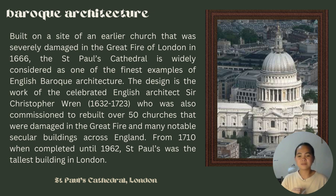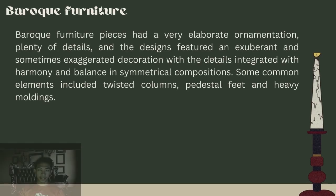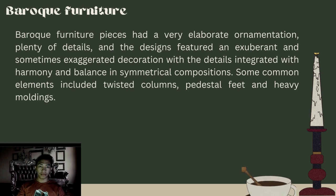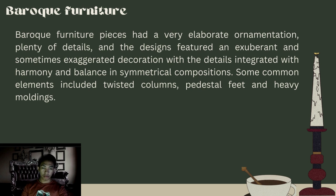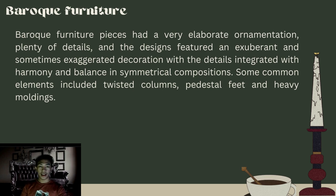From 1710 when completed until 1962, Saint Paul's was the tallest building in London. Baroque furniture pieces had very elaborate ornamentation with plenty of details. The designs featured exuberant and sometimes exaggerated decoration with details integrated with harmony and balance in symmetrical compositions. Some common elements included twisted columns, pedestal feet, and heavy moldings.